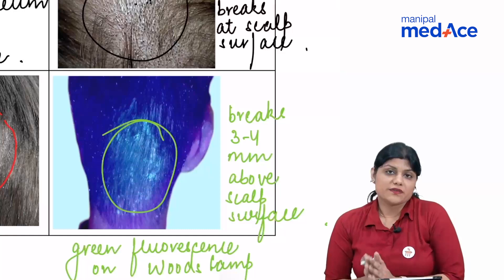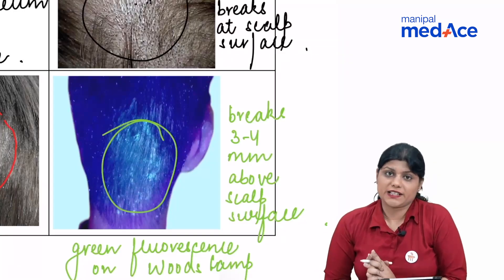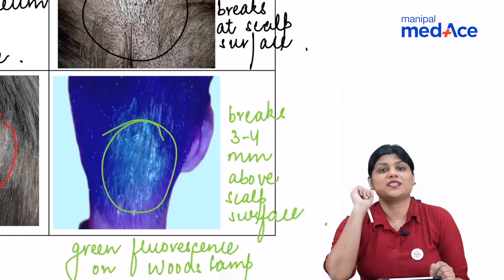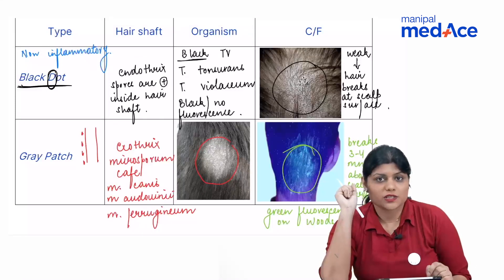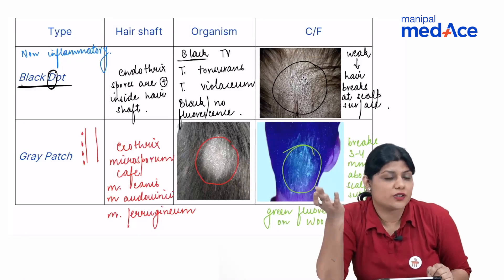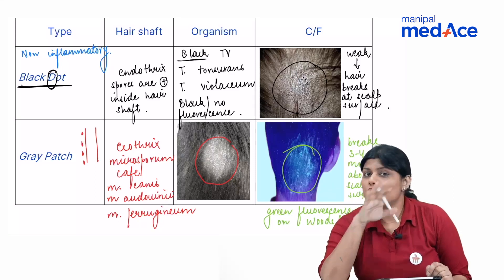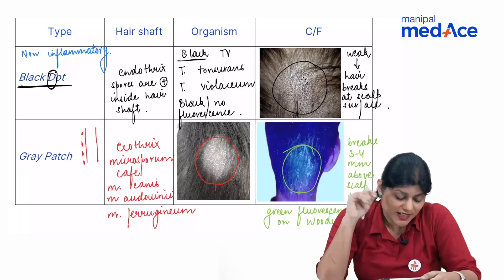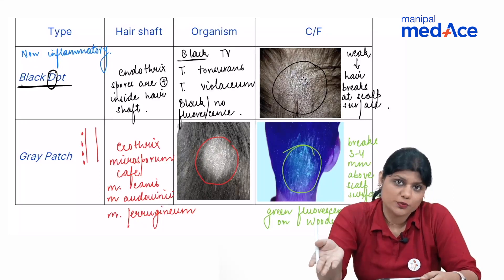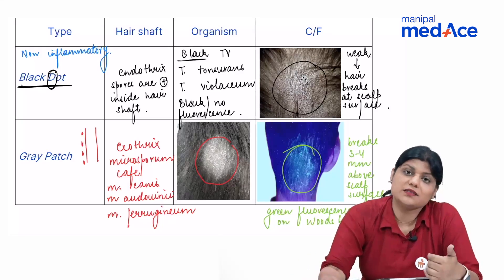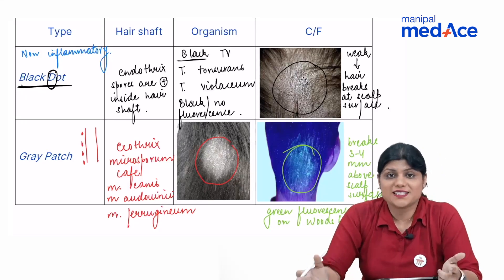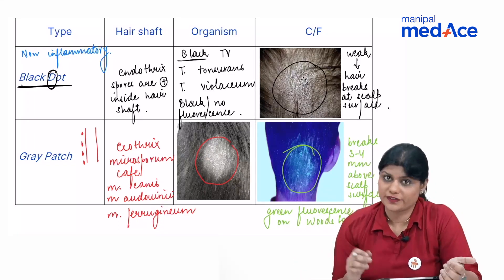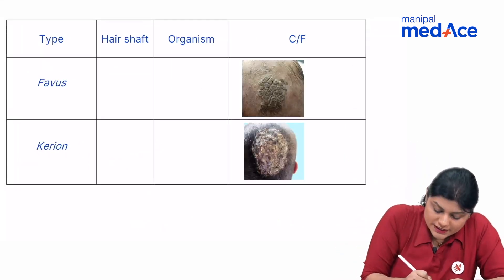To summarize the two non-inflammatory types: in black dot, we see black dots; the organisms are Trichophyton species; spores are inside the hair shaft; and there is no fluorescence. Grey patch is the exact opposite — spores are outside the hair shaft, there is green fluorescence, the appearance is grey patch, and the hair breaks 3 to 4 mm above the scalp surface.